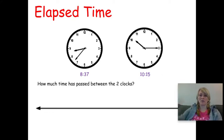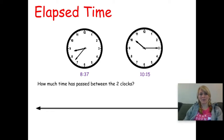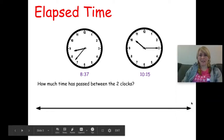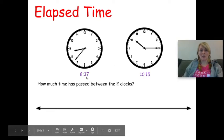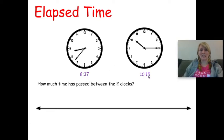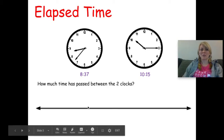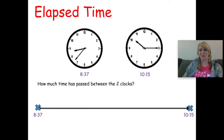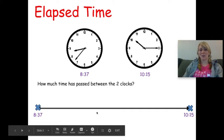Alright boys and girls, here is our lesson. Make sure you are paying close attention. I'm going to use a number line to figure out how much time has passed between eight thirty-seven and ten fifteen. For example, Miss Miracle went to a party at eight thirty-seven and left at ten fifteen — how much time did she spend at the party? I'll put eight thirty-seven at the start of the number line and ten fifteen at the end.